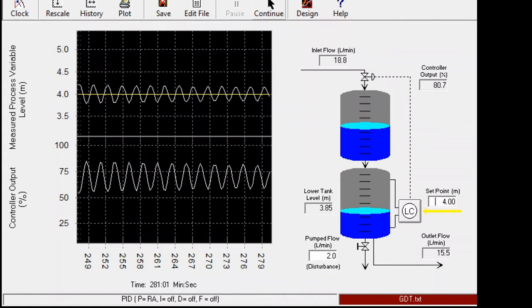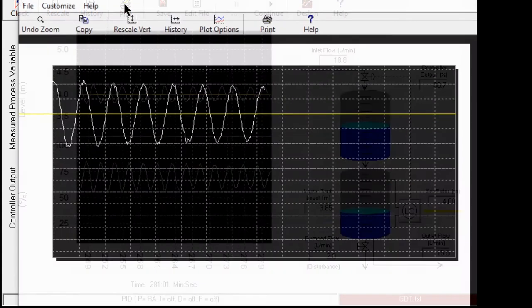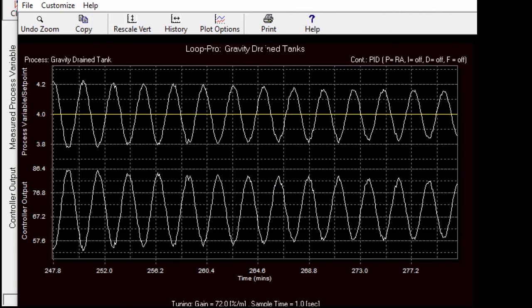Now let's look at the plot to find out what is the ultimate period for this case. If you look at any two points, any two peaks, you'll get the ultimate period for any oscillating signal. In this case, if you just zoom in.